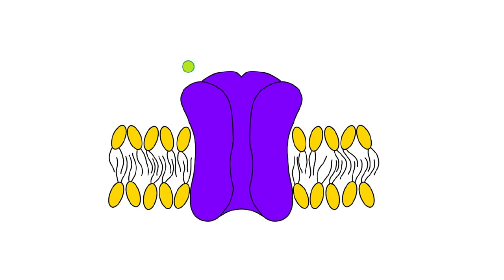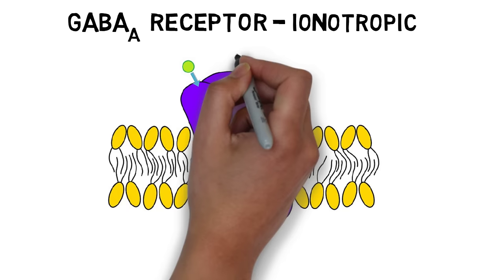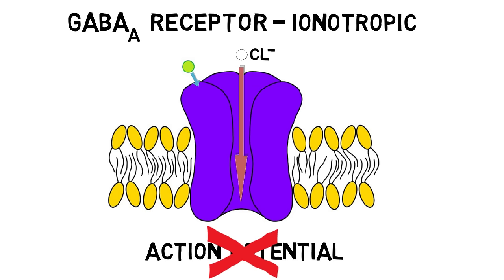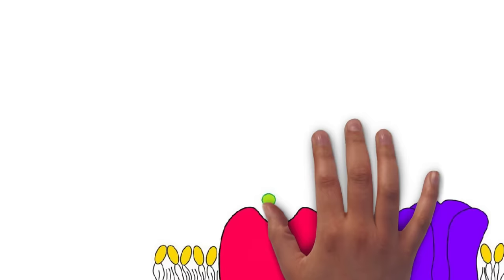There are two types of receptors GABA interacts with: GABA-A and GABA-B receptors. GABA-A receptors are ionotropic receptors. When GABA binds to the GABA-A receptor, it causes the opening of an associated ion channel that is permeable to the negatively charged ion chloride. When negative chloride ions flow into the neuron, they hyperpolarize the membrane potential of the neuron and make it less likely the neuron will fire an action potential.